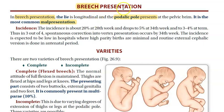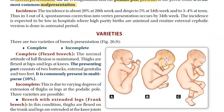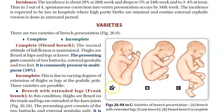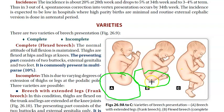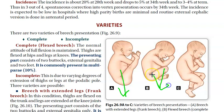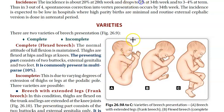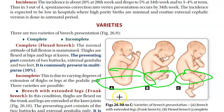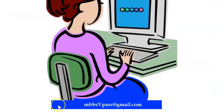In this video we look at breach presentation. Breach presentation means the presenting part is the podalic pole - the buttocks are presenting at the pelvic brim. The lie is longitudinal, and the podalic pole is presenting at the pelvic brim. This is breach presentation, and it is the most common malpresentation, which is why it appears frequently in exams.